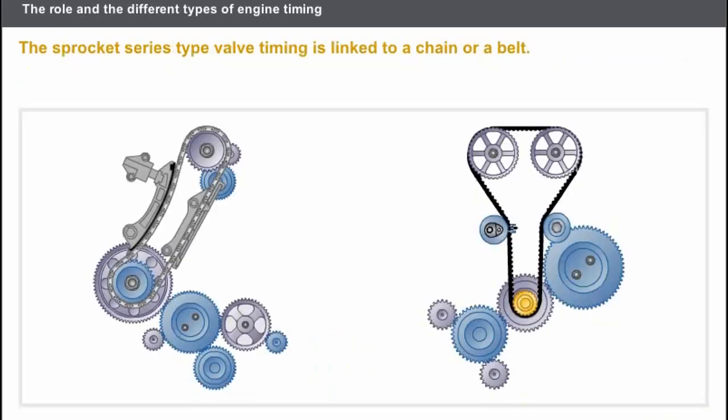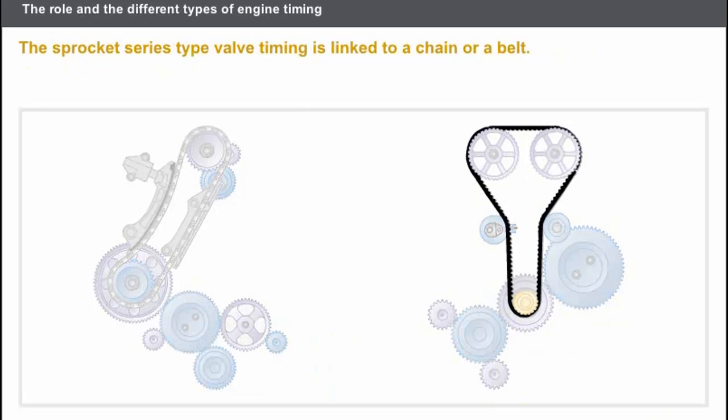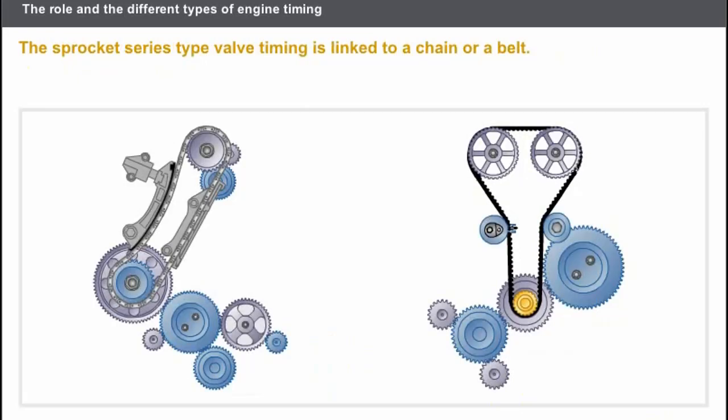Finally, let's take a look at the timing using a series of sprockets linked to a chain or a belt. These configurations are usually used for high-pressure diesel engines.